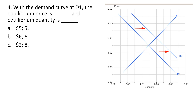Question 4. With the demand curve at D1, the equilibrium price is blank, and the equilibrium quantity is blank. Finding where the demand curve intersects the supply curve and locating the equilibrium price and equilibrium quantity, we get an equilibrium price of $5 and an equilibrium quantity of 5. Answer choice A.